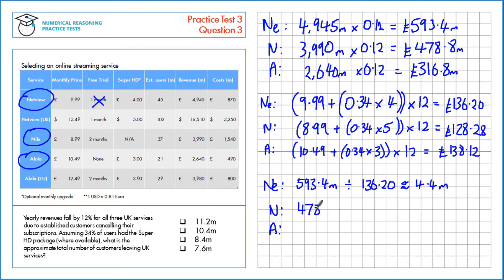That's £478.8 million divided by £128.28 per person, which is approximately 3.7 million. And the revenue of £316.8 million divided by £138.12 per person, which is approximately 2.3 million. We need to know the total number of people that left all these services. We need to add these three up, which gives us a total of 10.4 million.